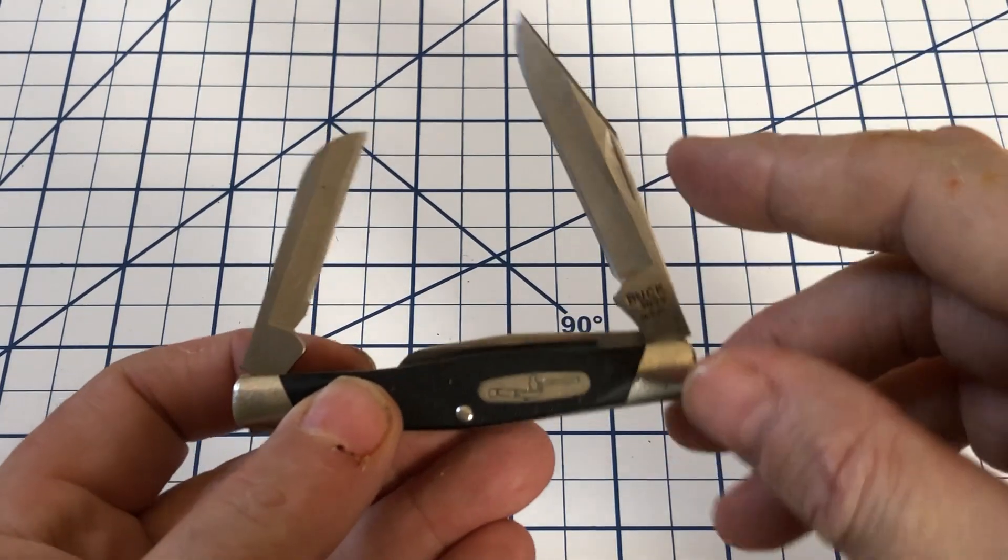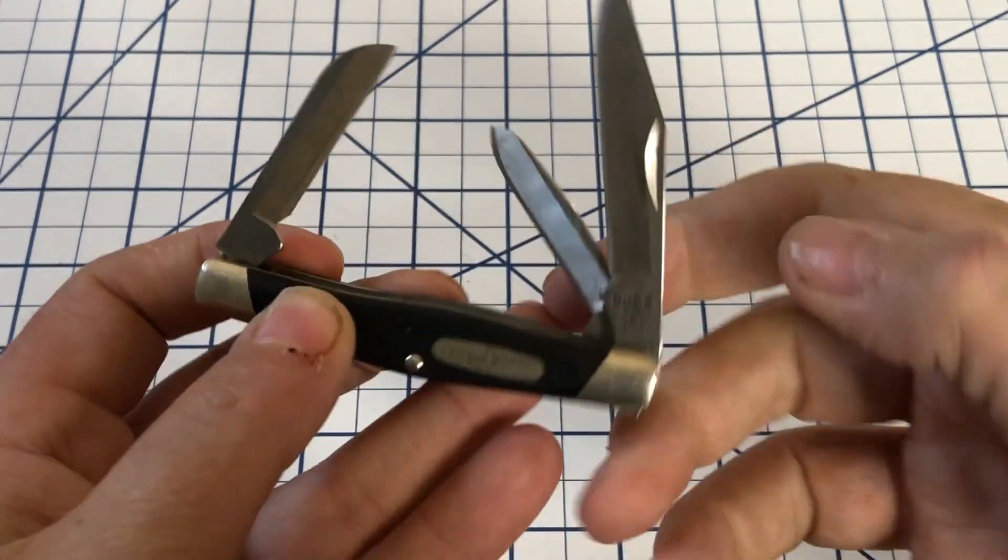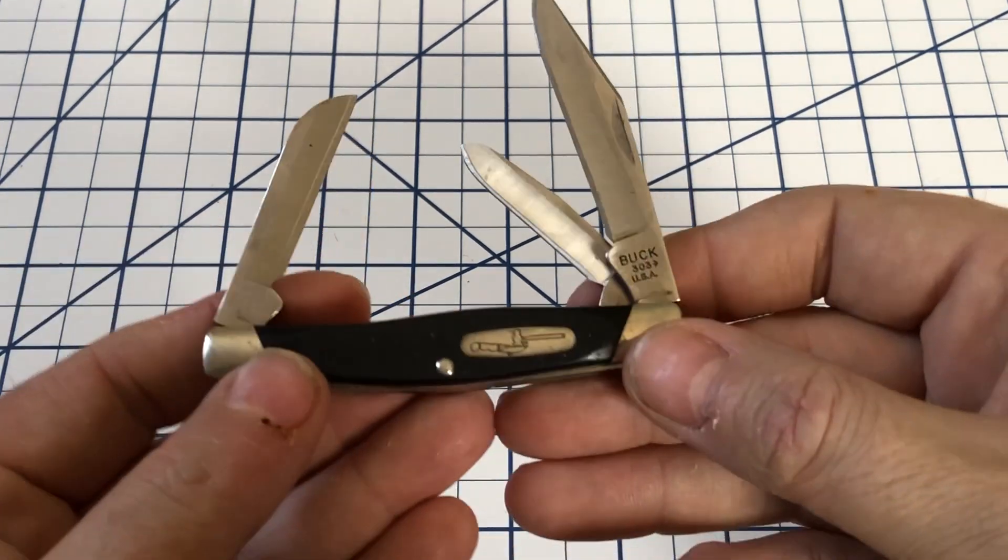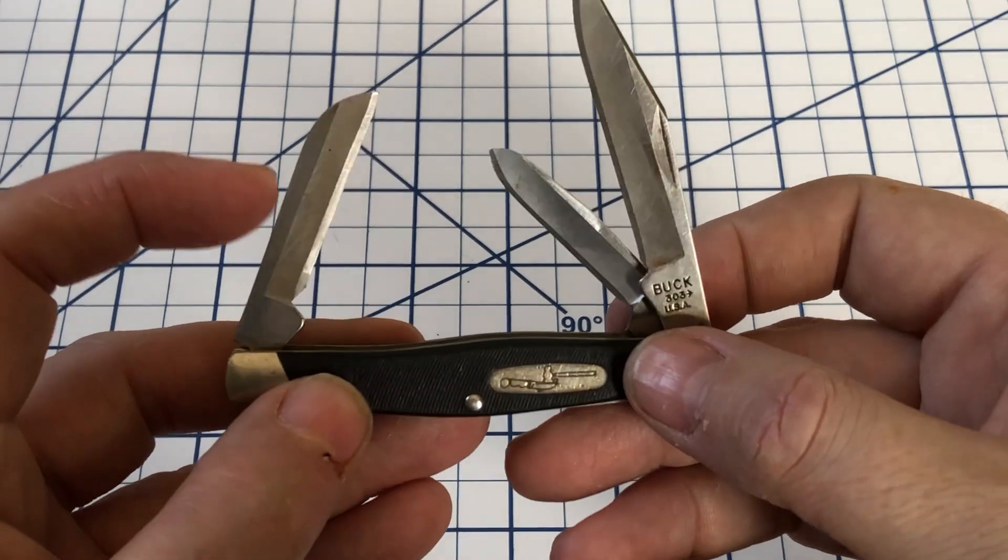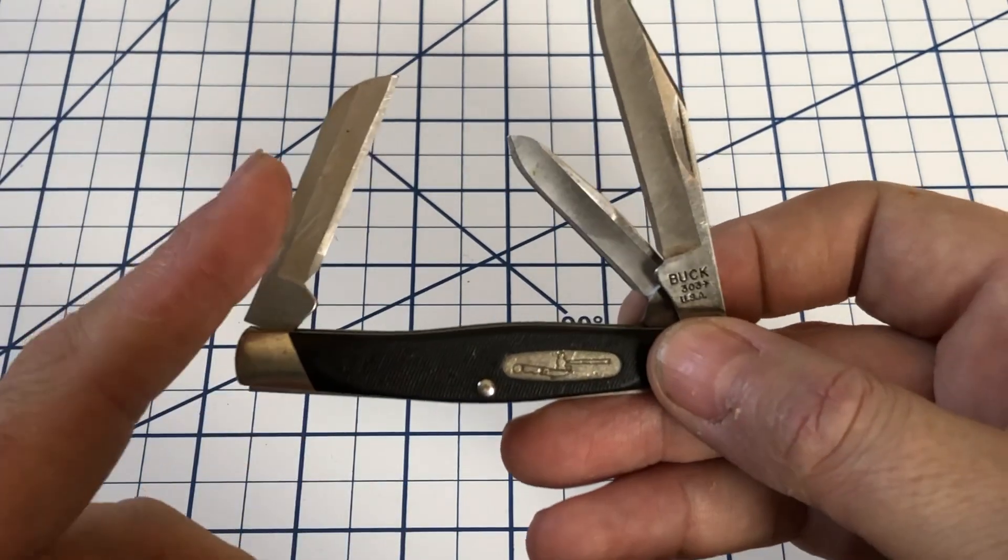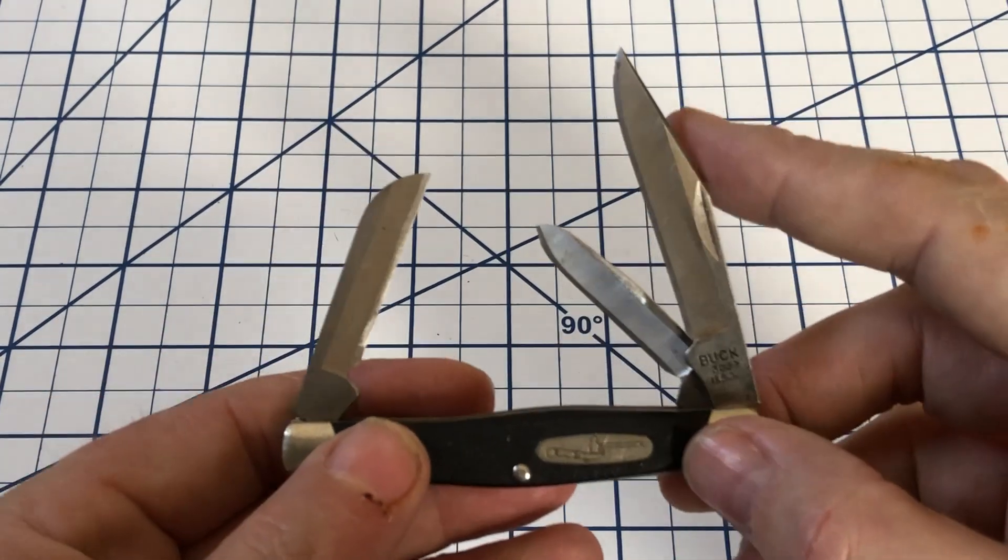Typically you'll have the clip blade and the sheep's foot at one end and then the spay blade at the other. Here you can see they've switched the spay blade and the sheep's foot. So you have the sheep's foot by itself at this end and the spay blade and clip blade at the other end.